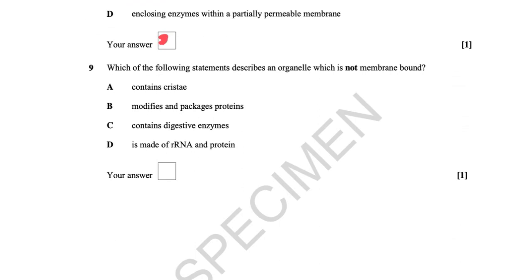Which statement describes an organelle that is not membrane-bound? Containing cristae refers to the mitochondrion, which is membrane-bound. Modifying and packaging proteins is the Golgi, which has many membranes. Containing digestive enzymes could be lysosomes, which are membrane-bound. The organelle made of ribosomal RNA and protein is a ribosome, and that is not membrane-bound. The answer is D.